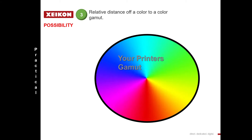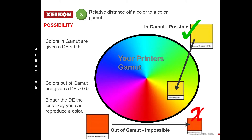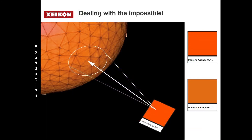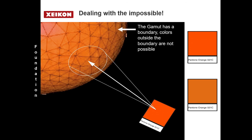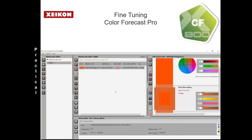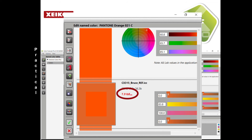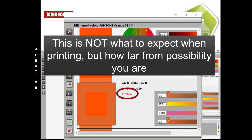To get this concept across: we have a colour in gamut, and we have a colour outside gamut. What you see here is the edge of the gamut — the skin of the gamut — and then we have our colour. The Delta E is how far away it is from possibility. The aim is what we desire; however, what we can print is the nearest thing in the gamut. Remember, this is not what to expect when you're printing, but how far away you are from possibility.